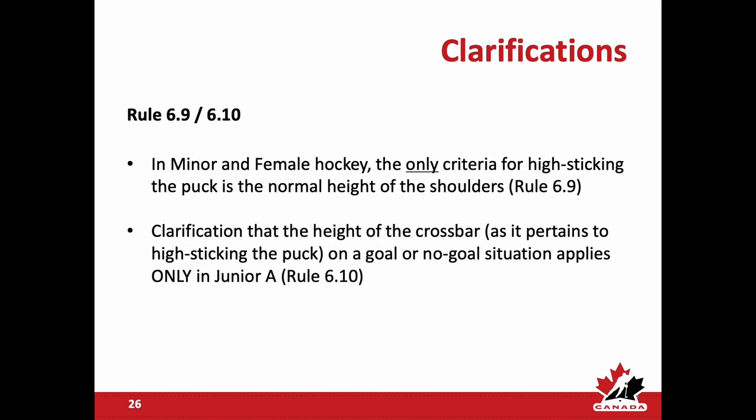Rules 6.9 and 6.10 clarify high sticking the puck in relation to a goal. In minor and female hockey, the only criteria is the normal height of the shoulders — if an attacking player contacts the puck above the normal height of their shoulders and the puck goes in the net, there will be no goal. For junior hockey, the threshold is the height of the crossbar — if an attacking player contacts the puck above the normal height of the crossbar, there is no goal.